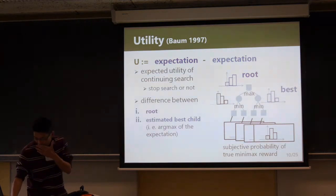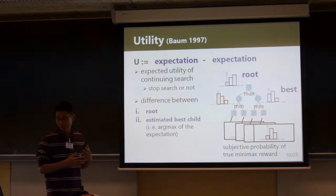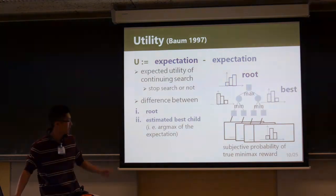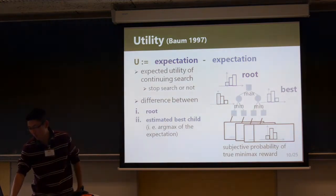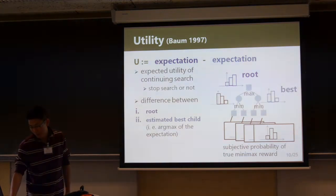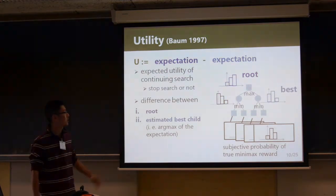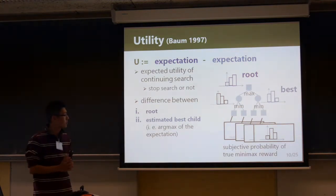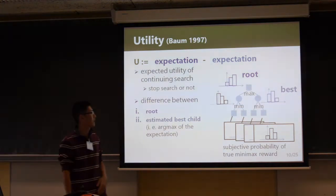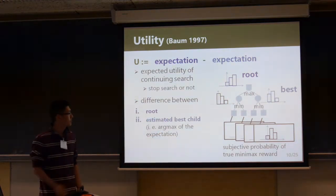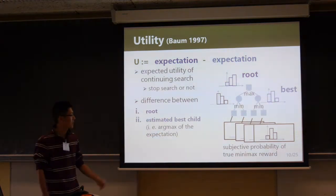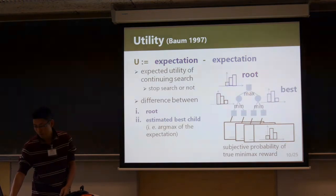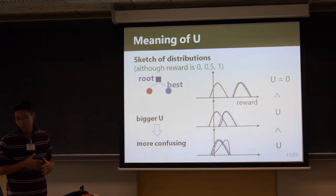Our exploration strategy also chooses a leaf based on U-value. Before calculating U-value, our algorithm calculates distribution from leaves to root by taking the mean or max of children's distributions. U-value is the difference of the expectation of the root and the estimated baseline. The expectation is calculated by distribution. This baseline means the max of the expectation among the children.